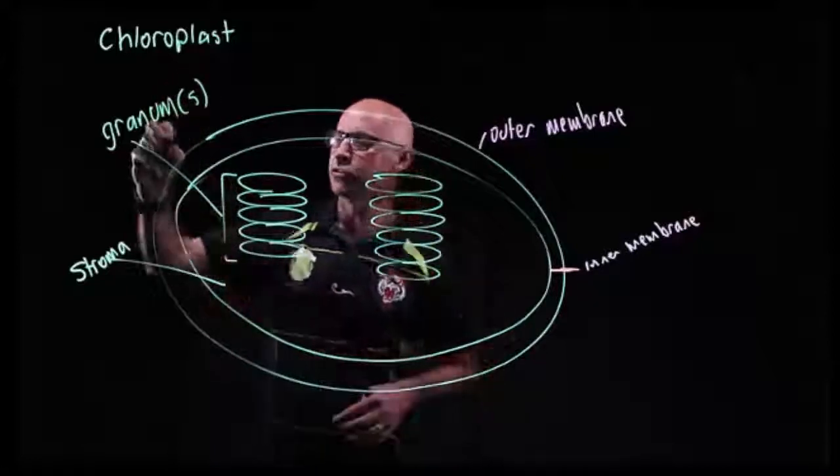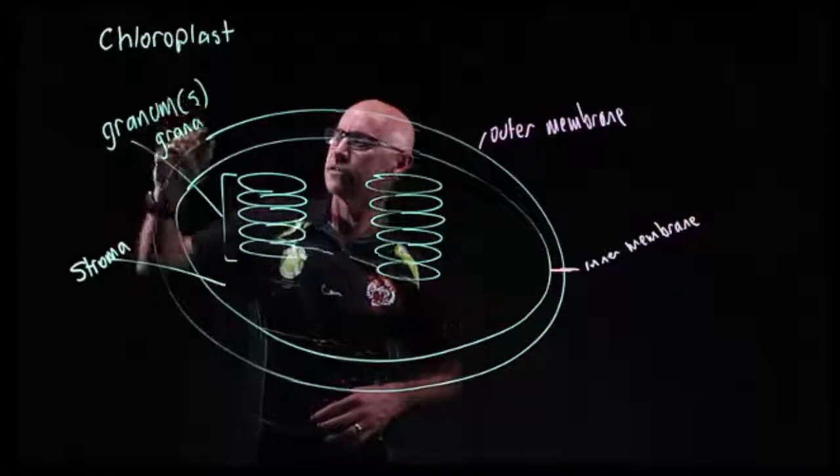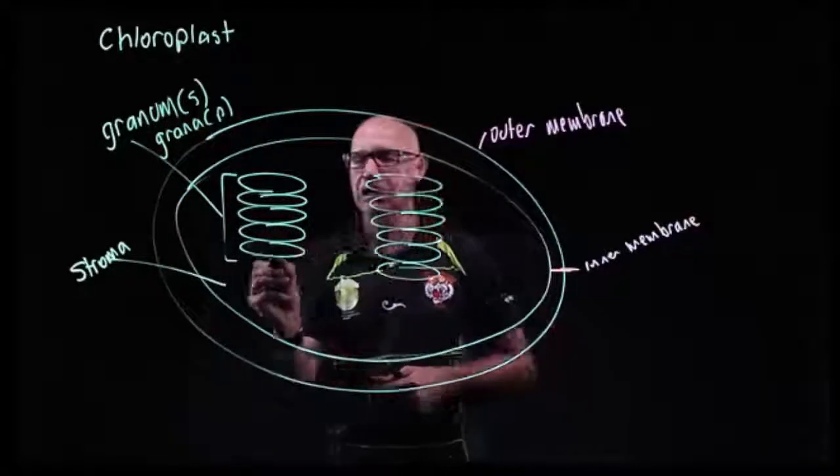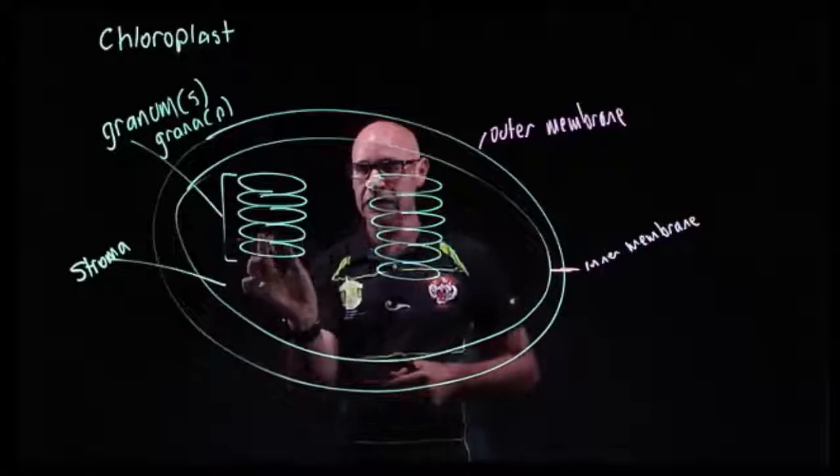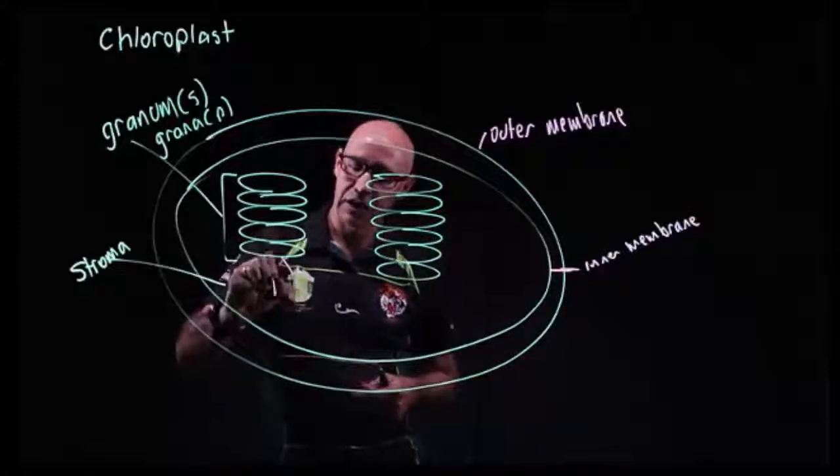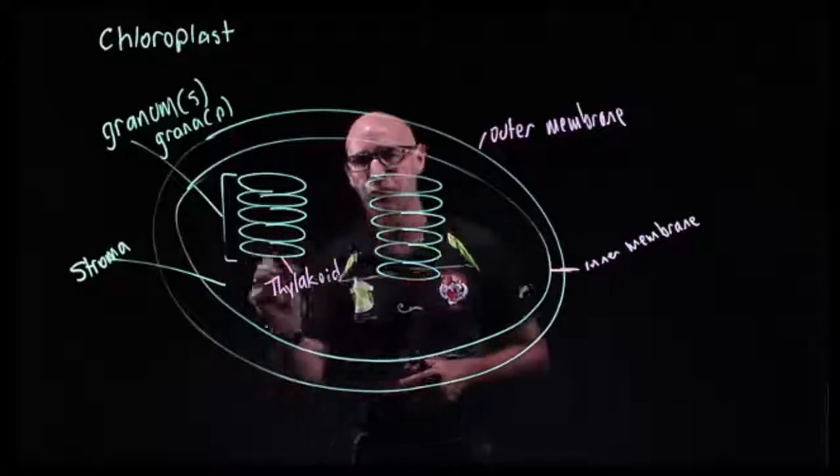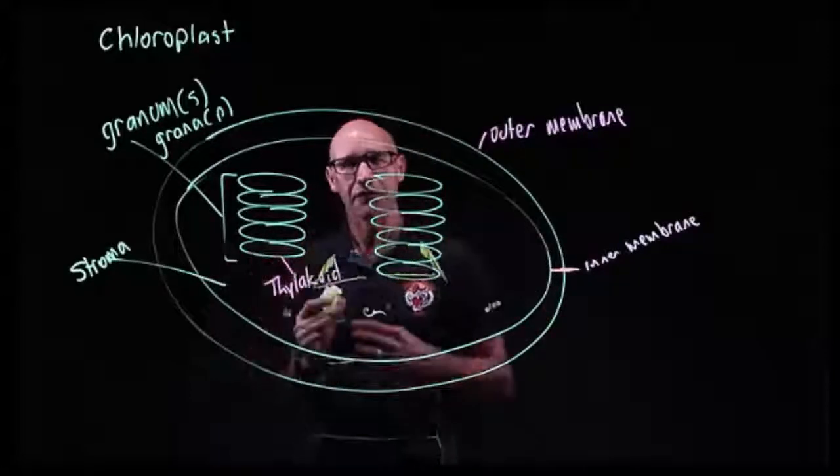And each individual disc here is called a thylakoid, and this membrane, the thylakoid membrane, is another very important environment for photosynthesis to occur.